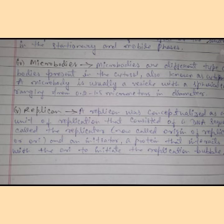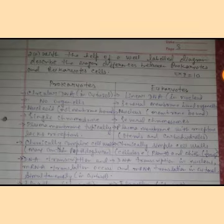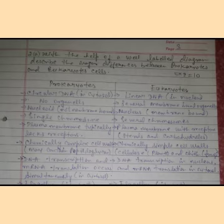Let's move to question number two. The second question is: with the help of a labeled diagram, describe the major differences between prokaryotic and eukaryotic cells.